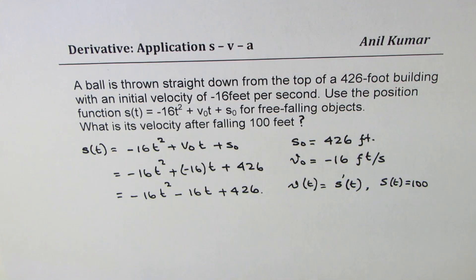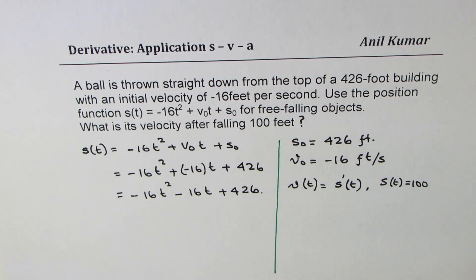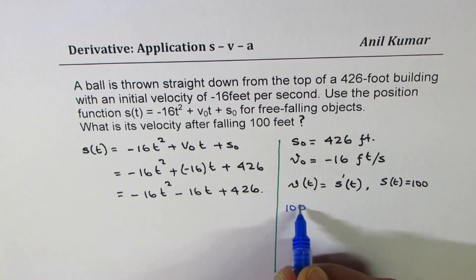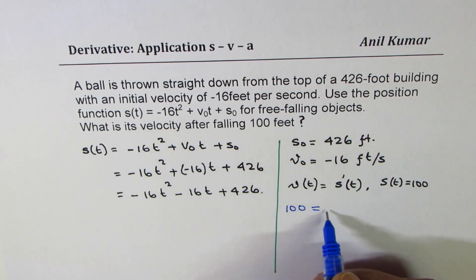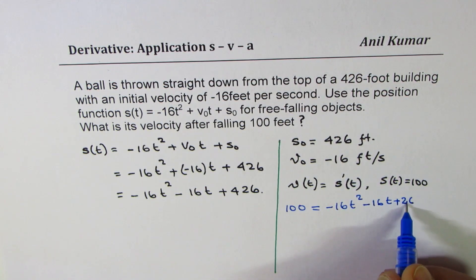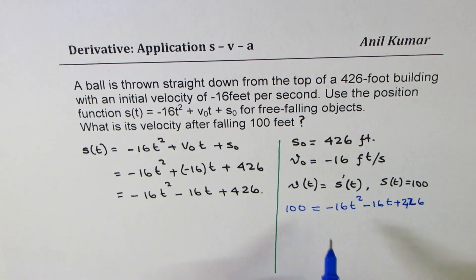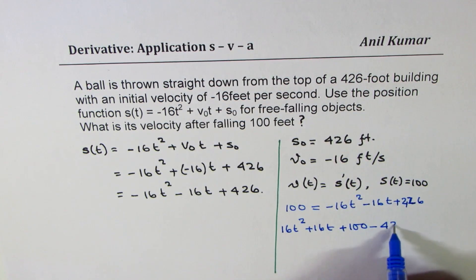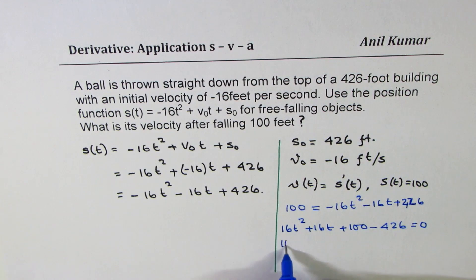Now, we are going to use power rule to solve this particular question. First part is we need to find time when the height is 100. So let me substitute 100 for displacement or height in this case and find what time is. So the equation is -16t² - 16t + 426. Let's bring all the terms together. We will take them to left side. So we have 16t² + 16t + 100 - 426 = 0 or 16t² + 16t - 326 = 0.